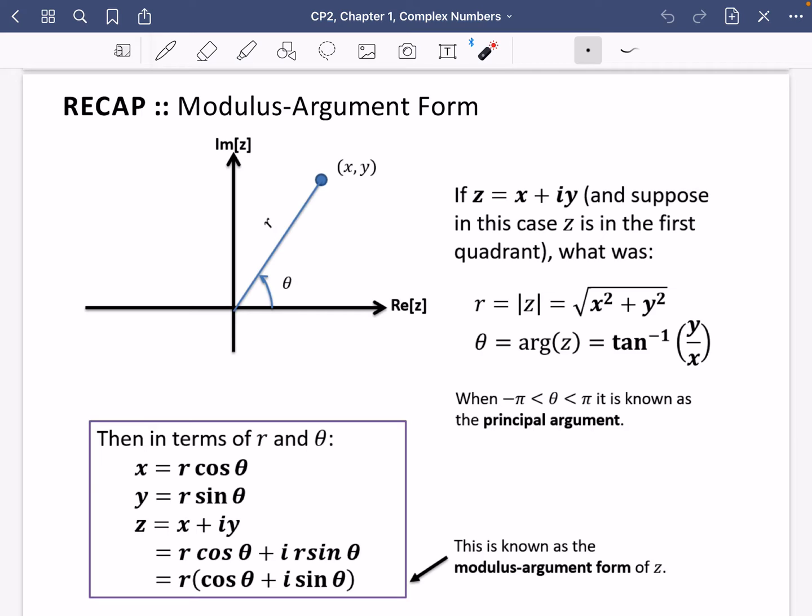When theta is between minus pi and pi, that is known as the principal argument. In other words, we need the argument to be in pi being measured in this direction or minus pi. It's a bit different to how we've done things before with trigonometry, where we normally say between 0 and 2 pi. The principal argument, being the one you should always give, is between either pi or minus pi.